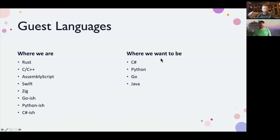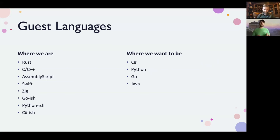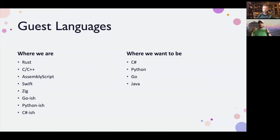Quickly on guest languages: there are really only five, and if we're being honest, the ones people use in production are three — Rust, C, and Swift. The others can build Wasm for the web but don't really build WASI-compatible things. Where we'd like to be in a year is native-level support in C#, Python, Go, and Java — the big names in enterprise development — so people have easy targets. And we still want Perl too.